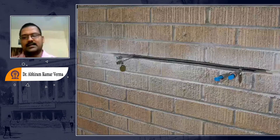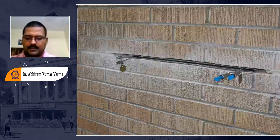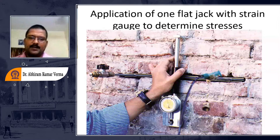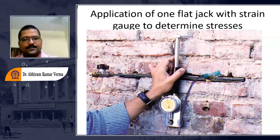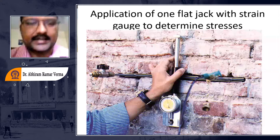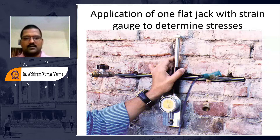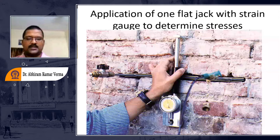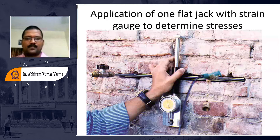From yesterday's class, we discussed the flat jack method. Using this method, we can find out the stresses acting normal to the plane of a slot. For each orientation, we can find one component of the stress tensor, and this helps us find out the complete stress tensor at a point.